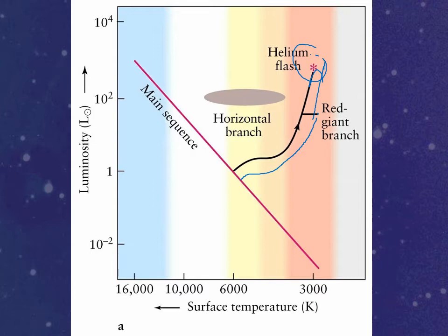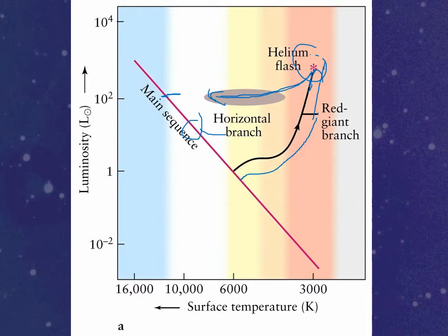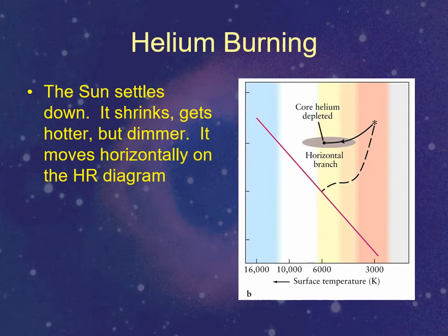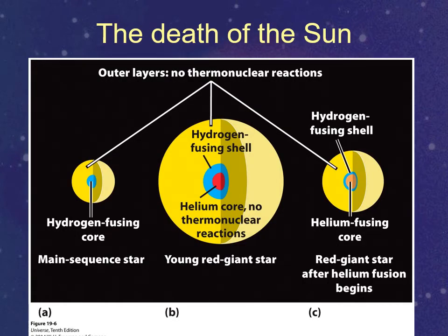After stabilizing, the Sun is fusing helium into carbon in the core. This is a much hotter process, so the Sun will shrink and start heading back toward the main sequence — specifically toward the upper part of it. On the HR diagram of a star cluster you'd see stars at various stages forming a big zigzag pattern. The horizontal segment of that zigzag is called the horizontal branch. The Sun will settle there — smaller, hotter, but a bit dimmer than it was as a red giant.